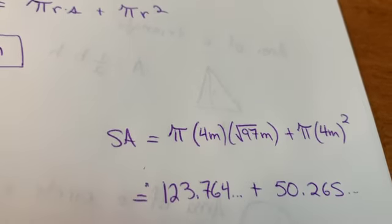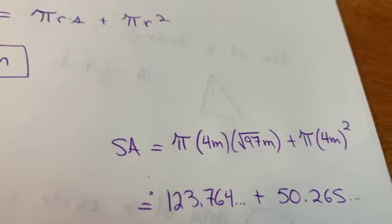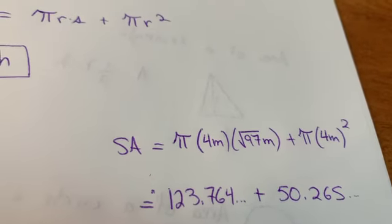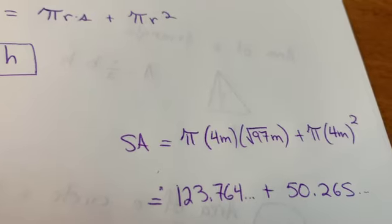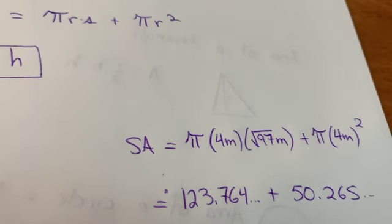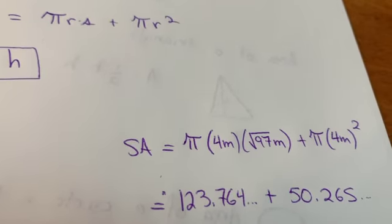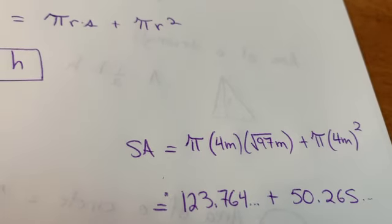And as long as I'm careful with the calculator, I'm going to end up with the sum of two areas, the lateral surface area, which turns out to be 123.764 meters squared plus 50.265 meters squared.